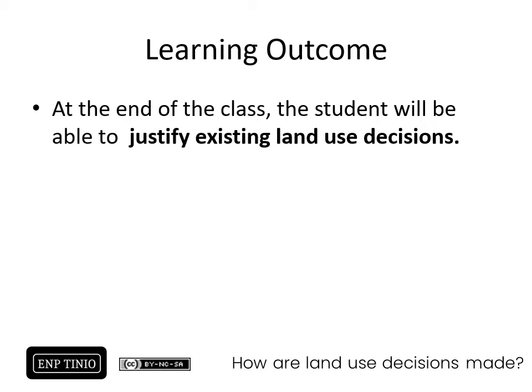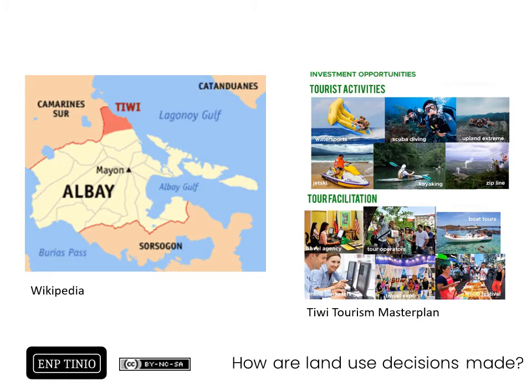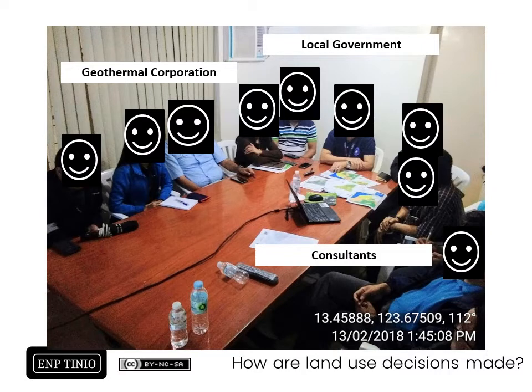At the end of this class, the student will be able to justify existing land use decisions that you observe all around you. As an introduction, Tiwi is a first-class municipality in Albay known for its tourism activities and facilities for tourism. Their tourism master plan markets the municipality as an investment opportunity in the field of tourism. This is one of our sessions in the process of completing the comprehensive land use plan of the municipality of Tiwi.